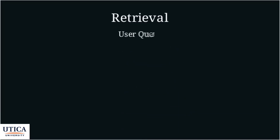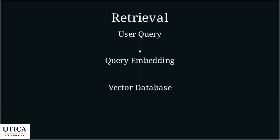When a user creates a query, that query is converted into a query embedding. This embedding is then used to search the vector database for the most similar, and therefore most relevant, chunks of information. This process finds the information that best answers the user's question from the knowledge base.